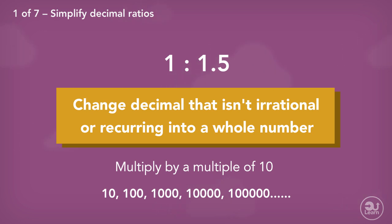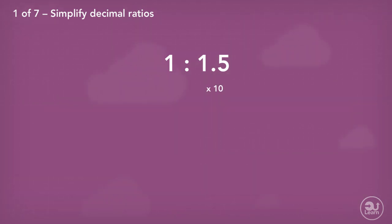Looking at this ratio, to change 1.5 into a whole number, we can multiply it by 10 to give us 15. However, just as we have been dividing both values in the ratio by the same number to keep the ratio equivalent, we must do the same when multiplying. This means 1 has to also be multiplied by 10. The new ratio is now 10 to 15.